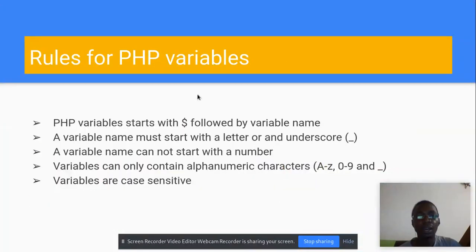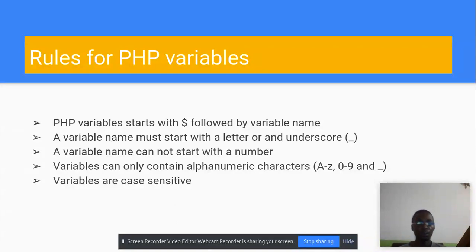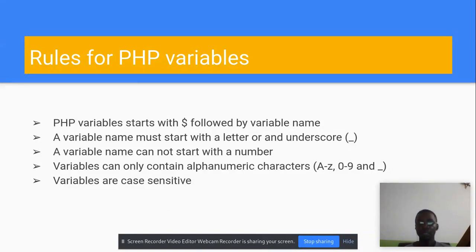Now there are rules for naming variables in PHP. Rule 1: every variable name starts with a dollar sign. Next, a variable must always start with a letter or an underscore — anything different at the start will cause an error. A variable cannot start with a number. Variables can only contain alphanumeric characters — that means A to Z, 0 to 9, and an underscore. Using a star or a hash will cause runtime errors.